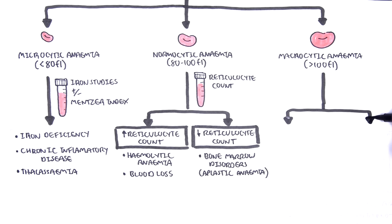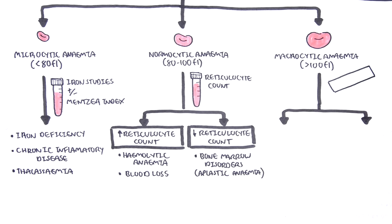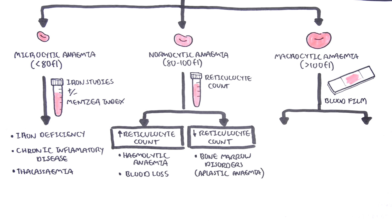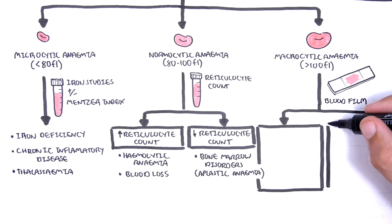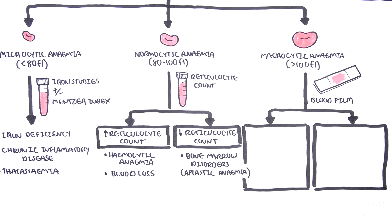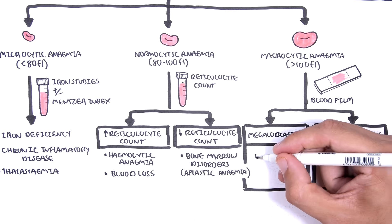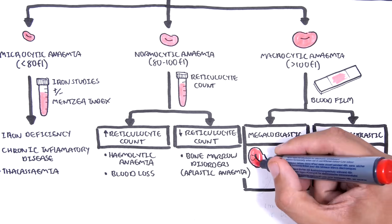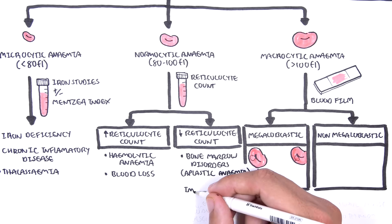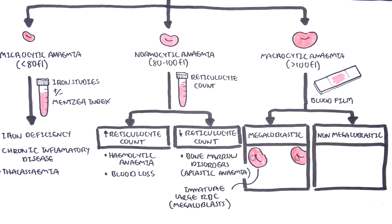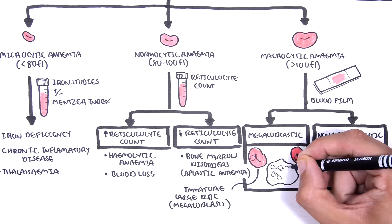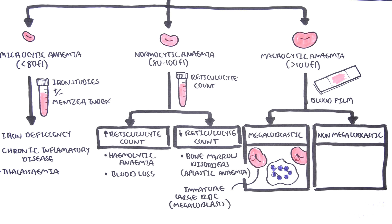When the hemoglobin is low and the MCV is high, this signifies macrocytic anemia. A blood film should be performed to differentiate between megaloblastic or non-megaloblastic macrocytic anemia. Megaloblastic anemia is basically where on the blood film you can see large, immature red blood cells called megaloblasts. Also, you can potentially see hypersegmented neutrophils.